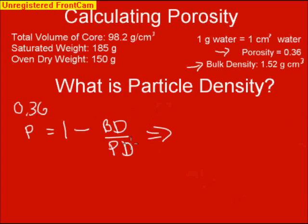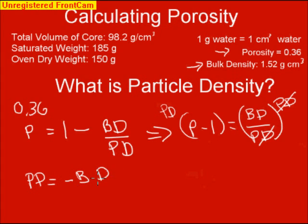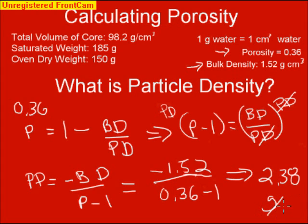Rearranging the equation by subtracting 1 gives porosity minus 1 equals bulk density over particle density. Multiplying by particle density and dividing by porosity minus 1, you get: particle density equals negative bulk density over (porosity minus 1). Plugging in our values: negative 1.52 divided by (0.36 minus 1) gives a particle density of 2.38 grams per cubic centimeter.